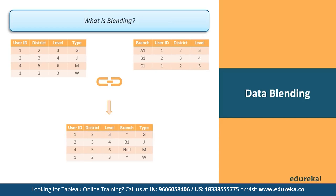If there are multiple values for rows, an asterisk is shown. Measure values are aggregated based on how the field is aggregated in the view. In this case, not all values can be a part of the resulting table because of two reasons.